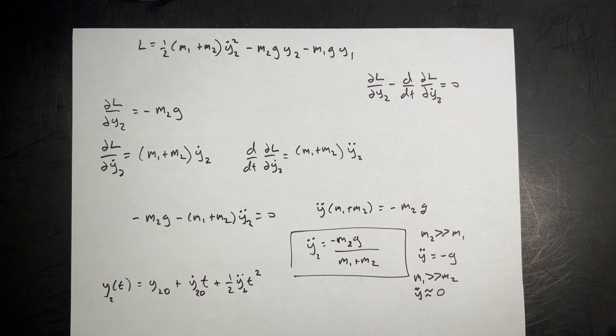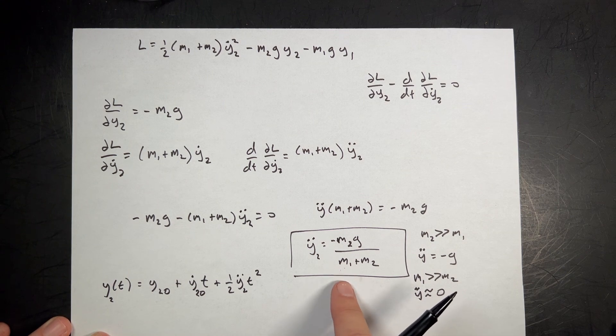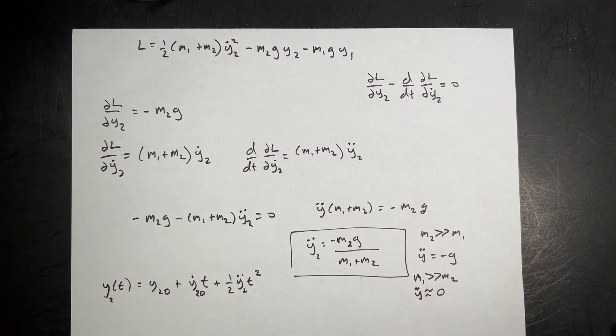And that is the half Atwood machine with Lagrangian mechanics. And just if you check, if you do this with other mechanics, Newtonian mechanics, you get the same thing. That was fun.